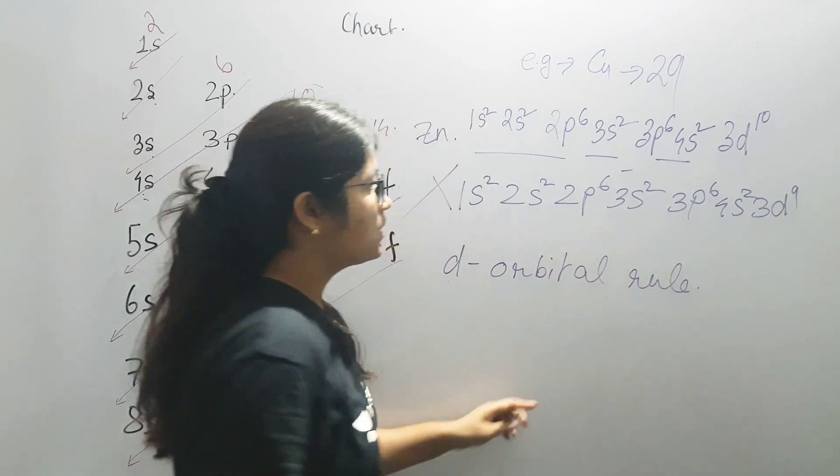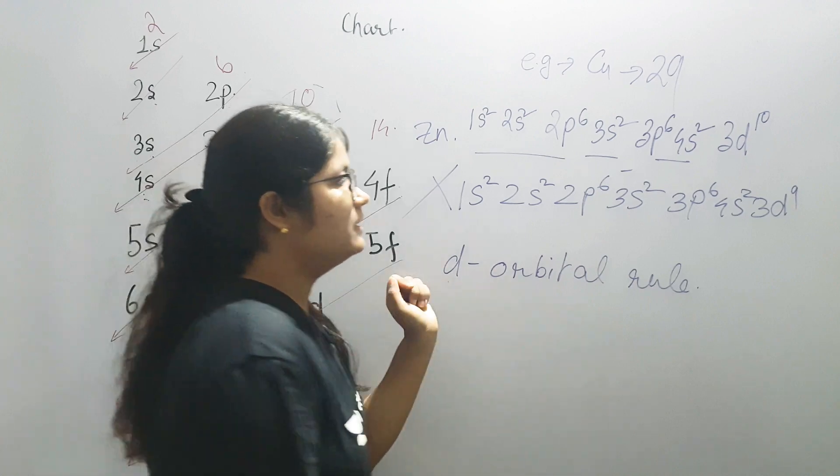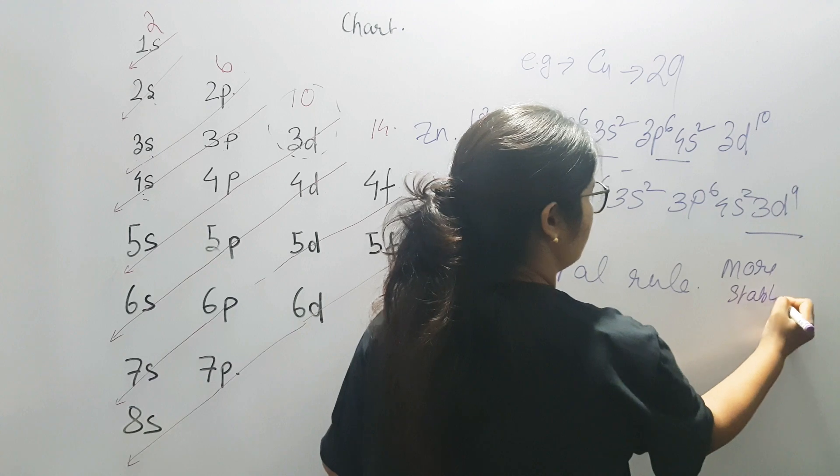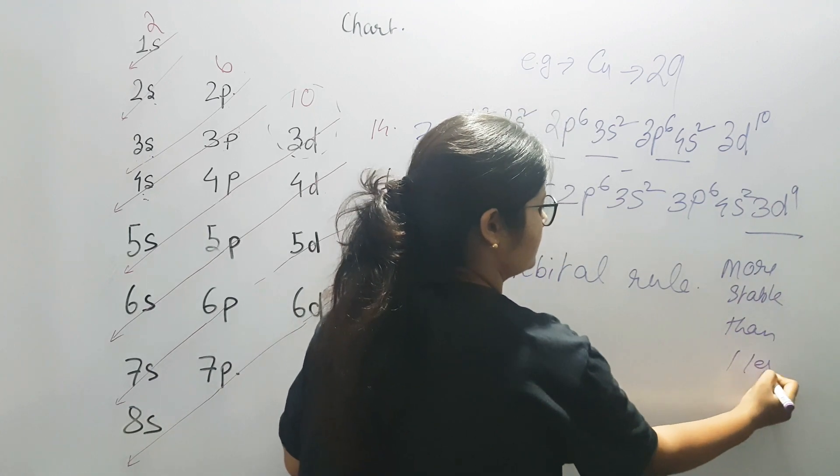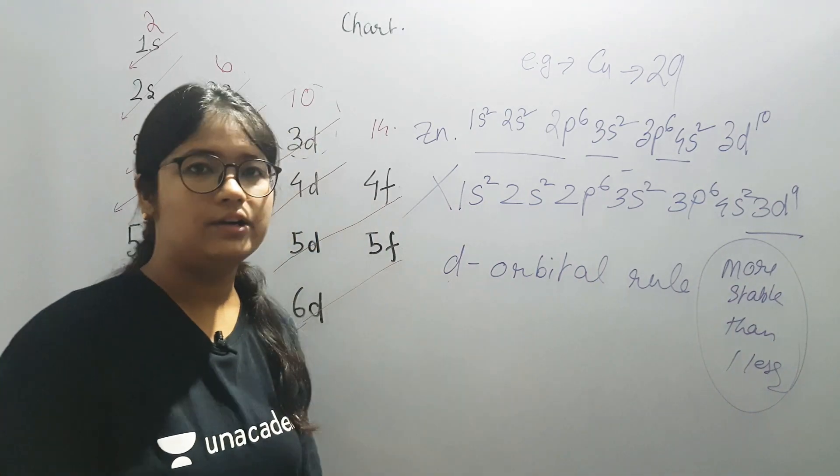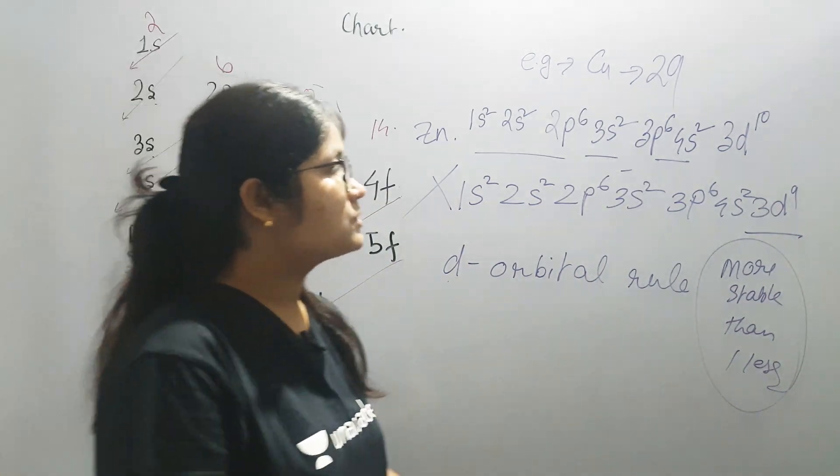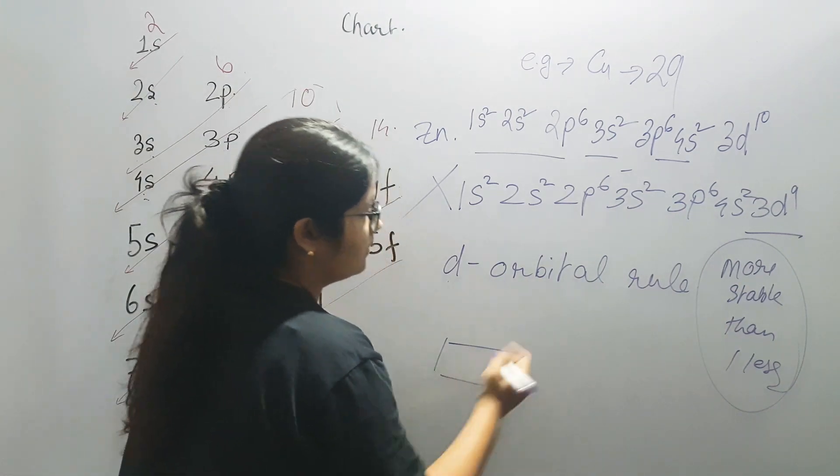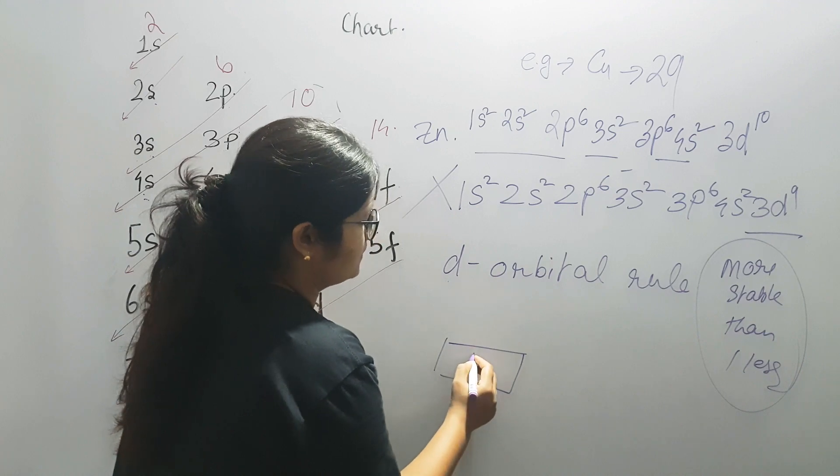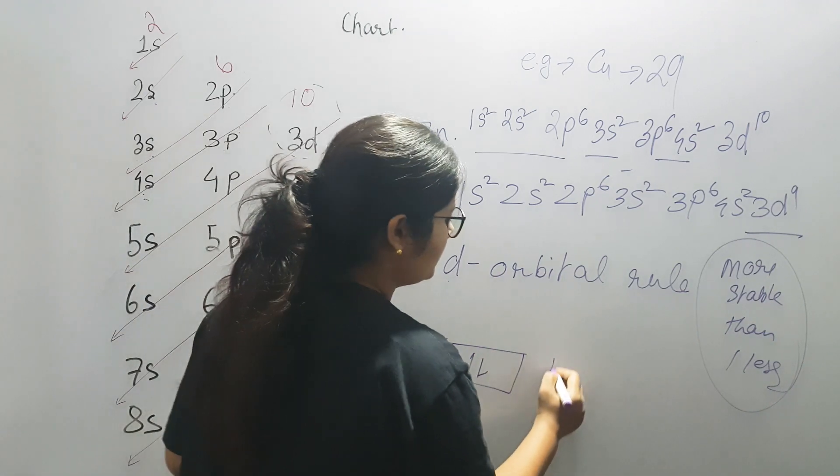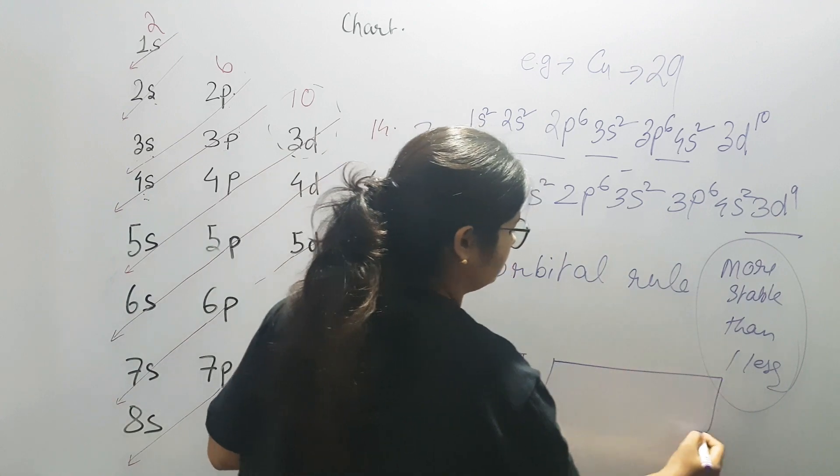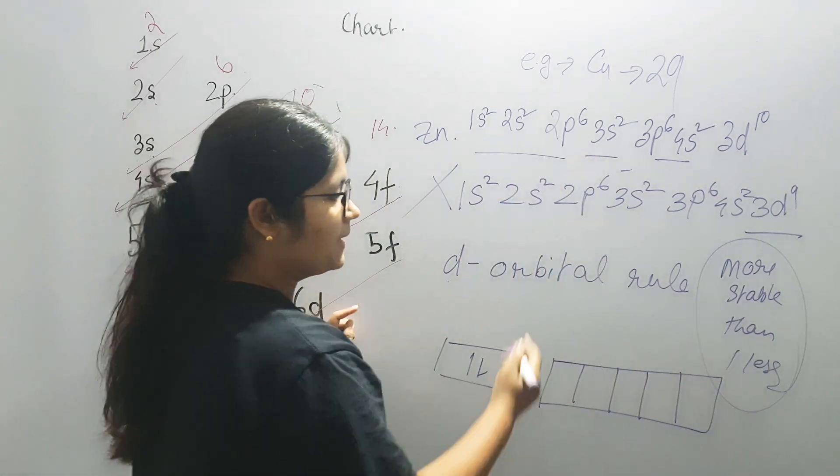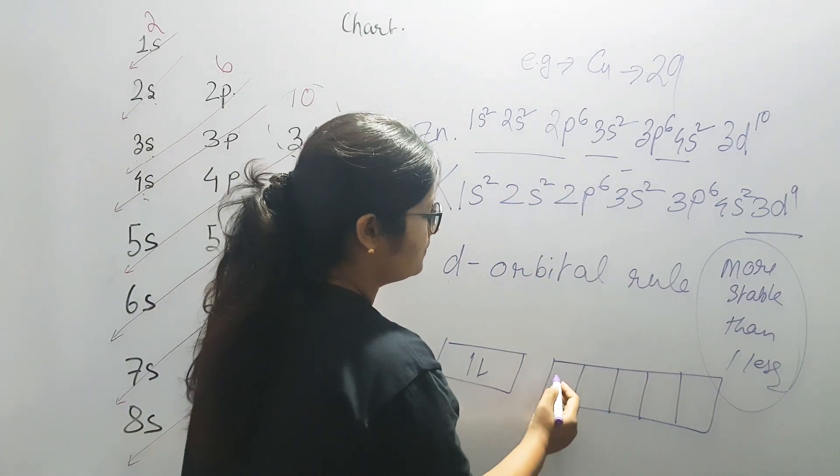This rule says that half-filled or completely filled d-orbital is more stable than one less. If we add S, then we add 2 electrons in S orbital. Then what do we do in D? 1, 2, 3, 4, 5. D10. First, we fill D. Half filled and completely filled.